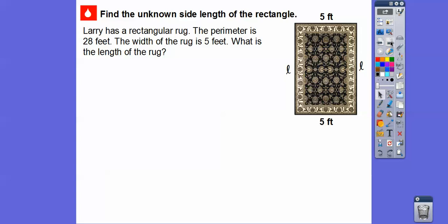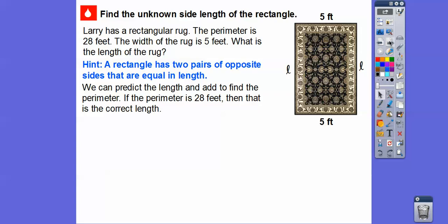Here we have unknown side lengths of a rectangle right here, and we're going to use the guess and check method right here. So Larry has a rectangular rug, and the perimeter of this rug is 28 feet. And it says that the width is 5 feet right here. What is the length? So here's a length over here, here's a length. So if we add up 5 plus this length, plus 5 plus this length, that will give us a perimeter of 28 feet. So here we don't know one side, we don't know two sides on this guy right here. So a rectangle has two pairs of opposite sides that are equal to each other. So this 5 and this 5 are equal, and this L, whatever that is, is going to equal this L right here. So we can predict the length and add to find the perimeter. If the perimeter is 28 feet, then that's our correct answer. If it's not, then we'll keep guessing.